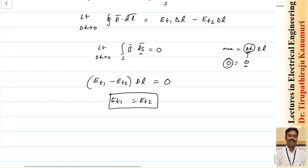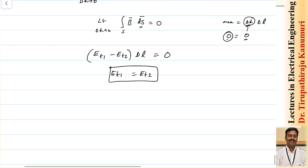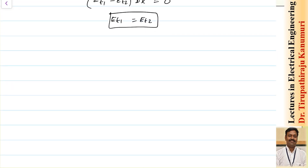Now, for calculating the normal component of D, we use the surface integral. I take a closed surface and consider the normal component dn1 in the first medium and dn2 in the second, with height delta h tending to 0. There may be a surface charge density rho s over surface area delta s. We apply the relation: closed surface integral of D dot ds equals volume integral of rho v dv.